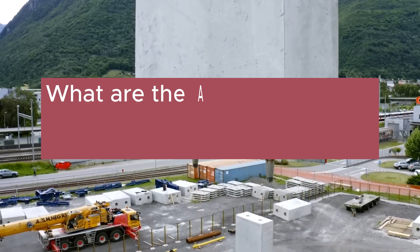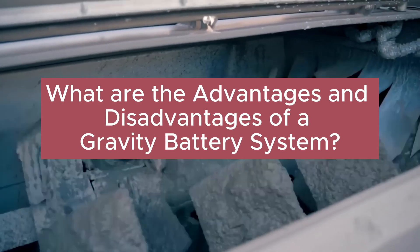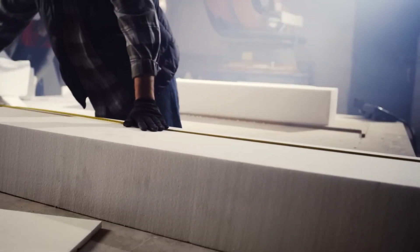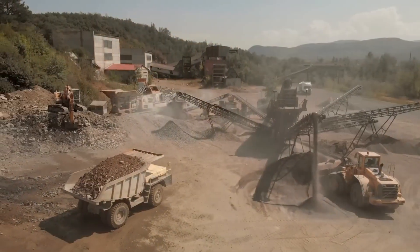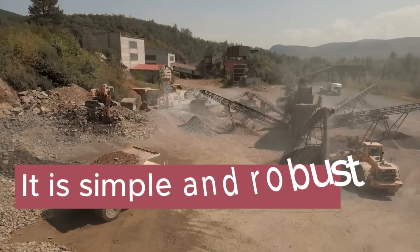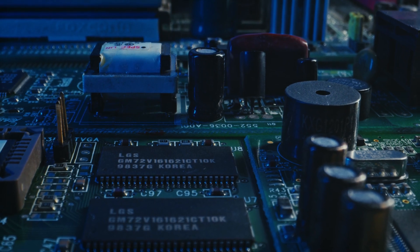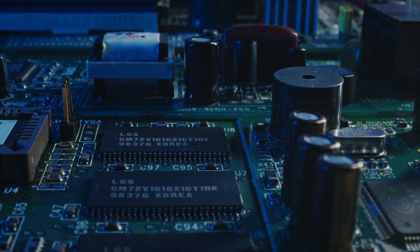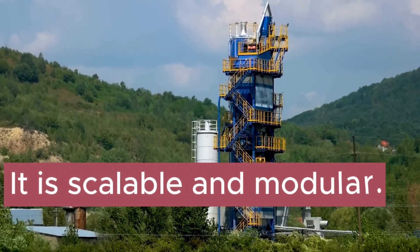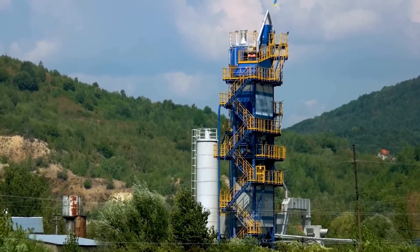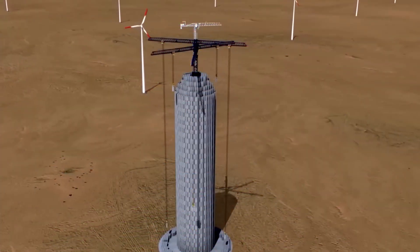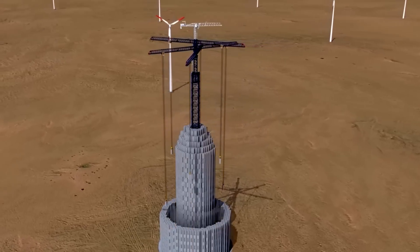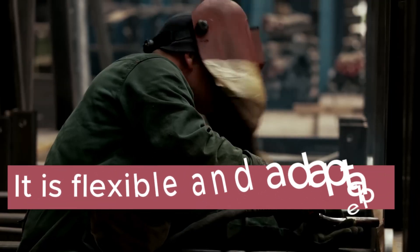A gravity battery system has several advantages over other types of energy storage systems. It is simple and robust, not requiring complex chemistry or electronics and having few moving parts that can wear out or break down. It is scalable and modular, easily adjusted to different sizes and capacities by changing the number and size of storage mediums and by stacking them vertically or horizontally. It is flexible and adaptable.